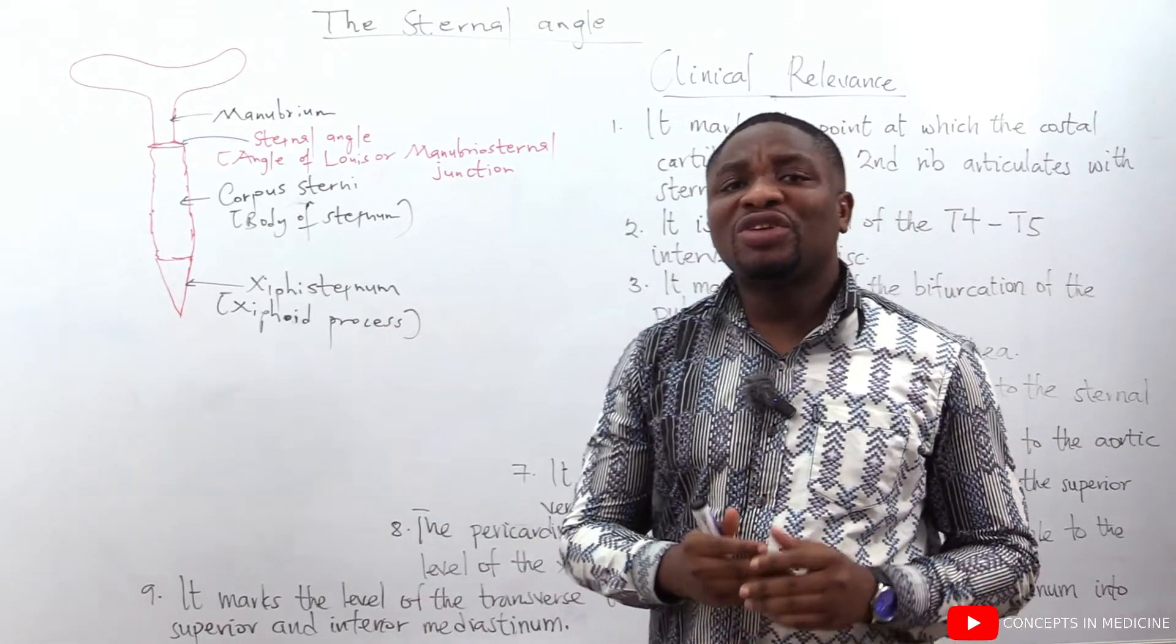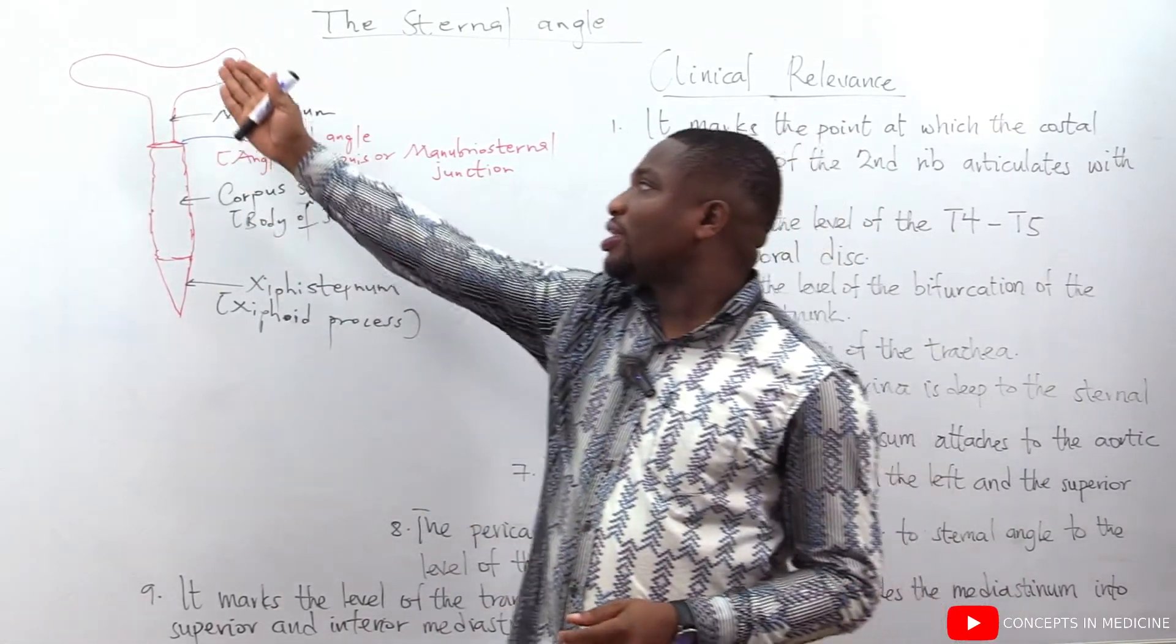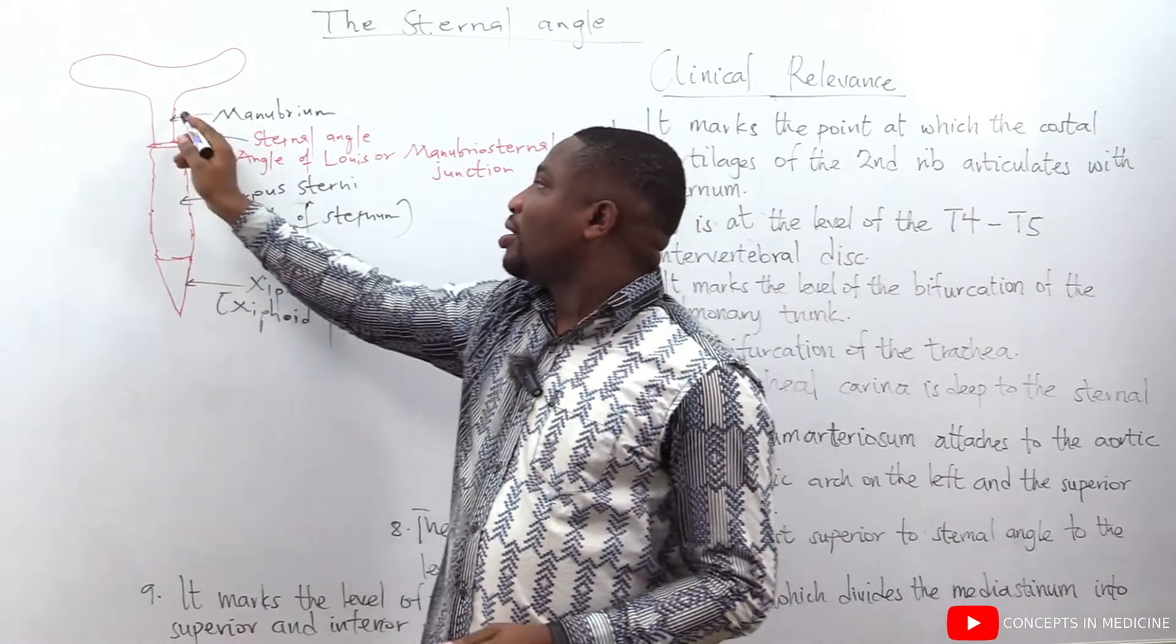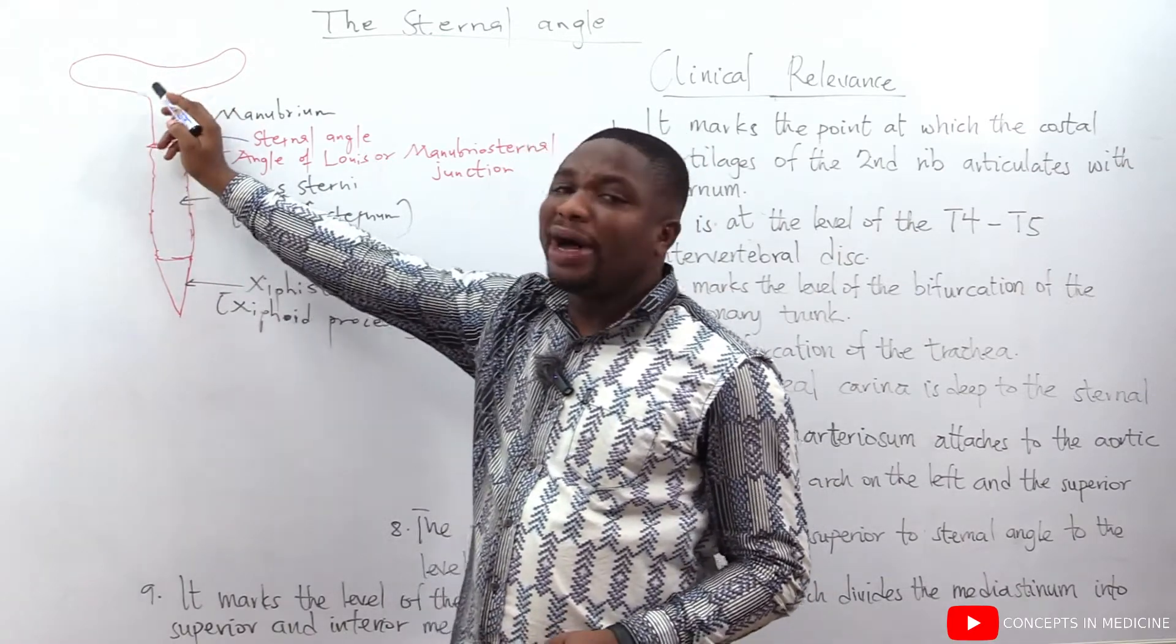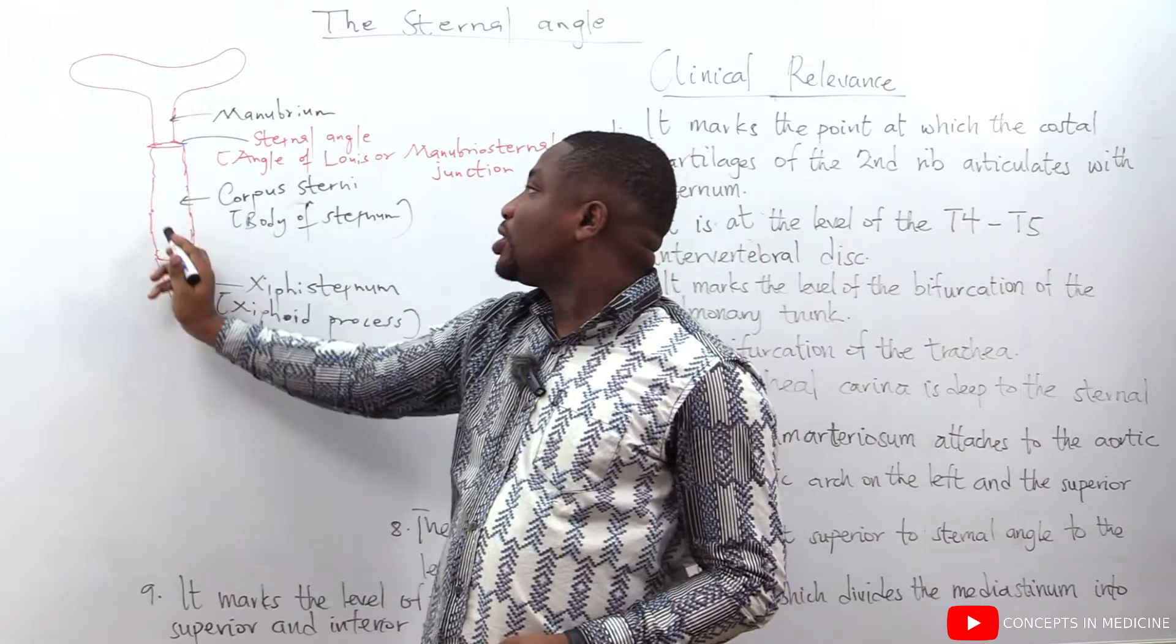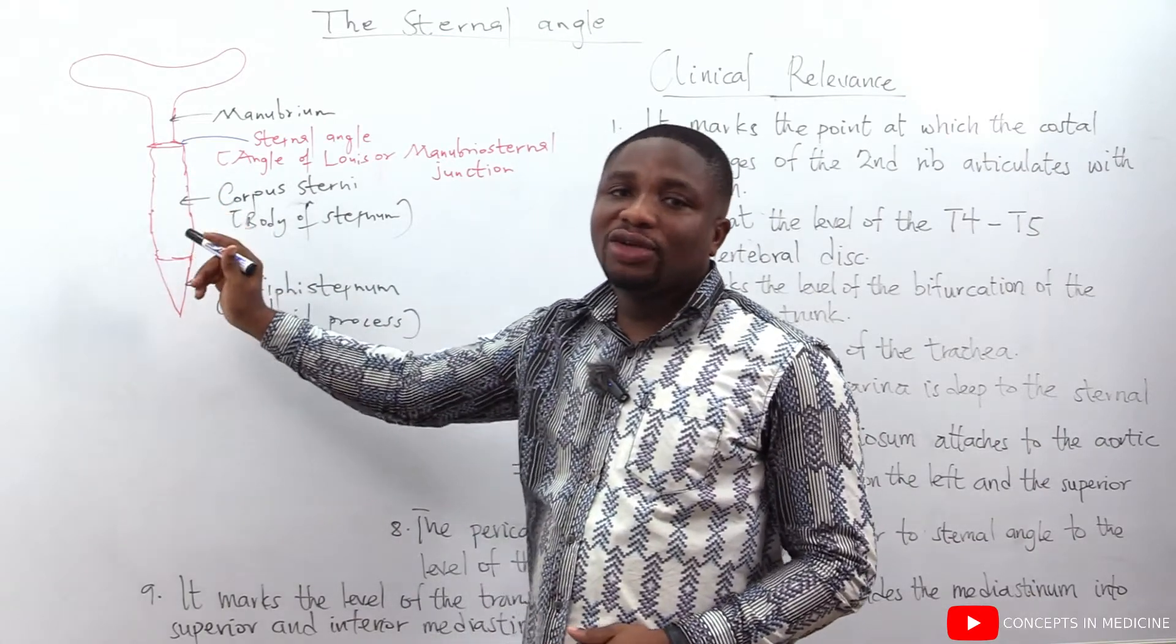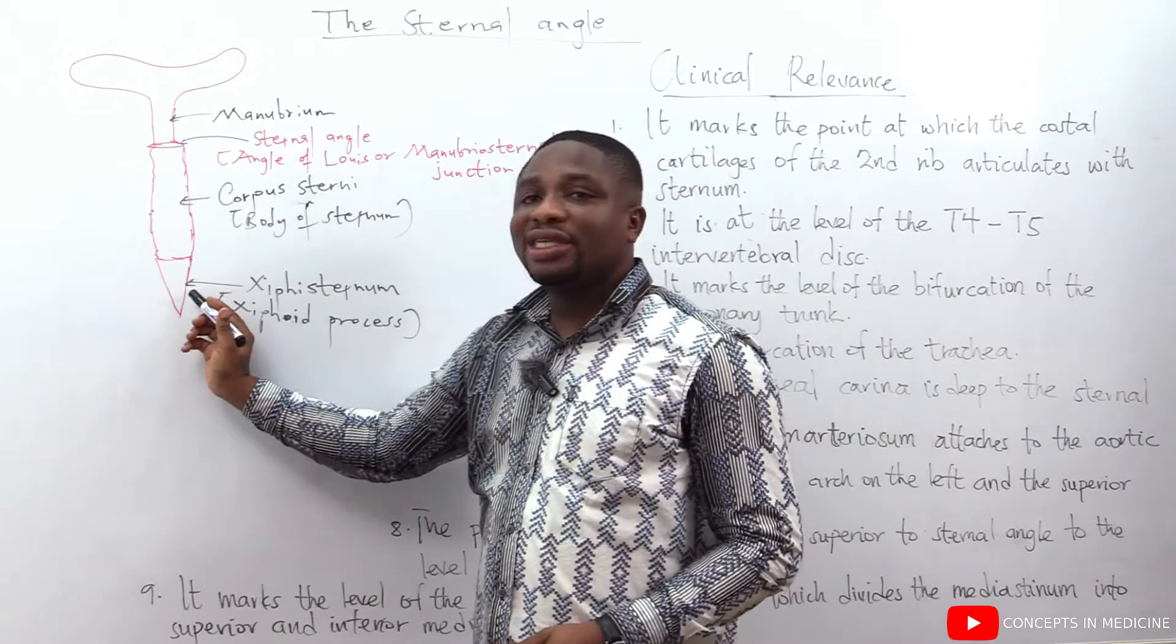So first of all, let's look at the structure of the sternum. When we look at the sternum that is illustrated here, the first portion of the sternum we call it the manubrium. The next portion, we call it the corpus sterni or the body of the sternum. And finally, we have the xiphoid sternum.